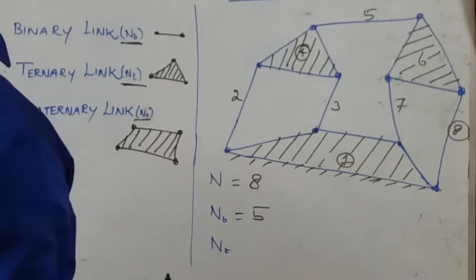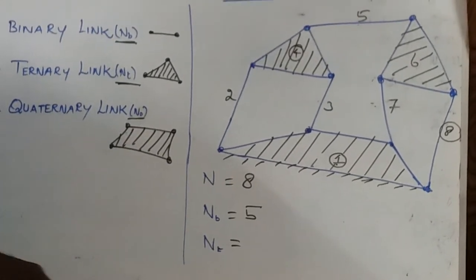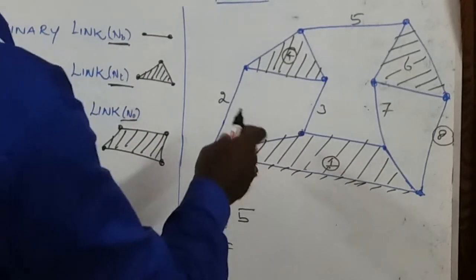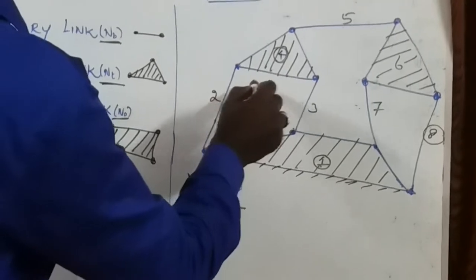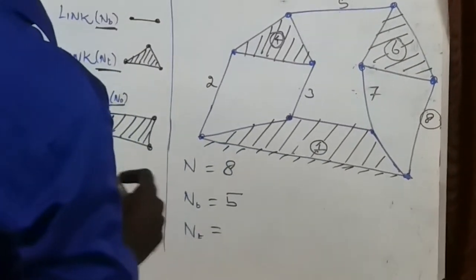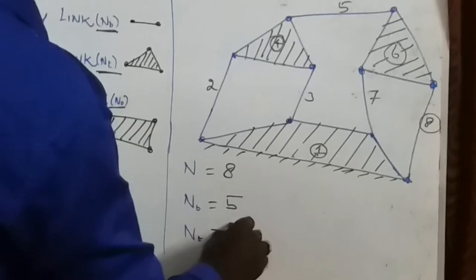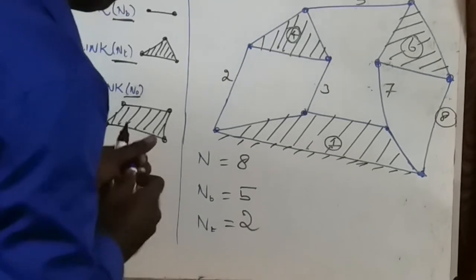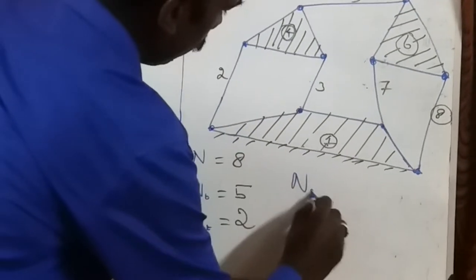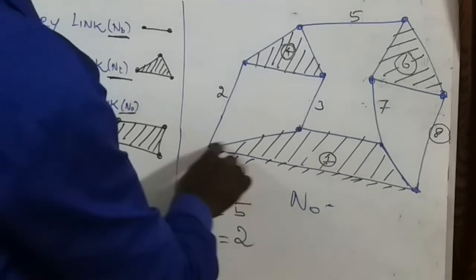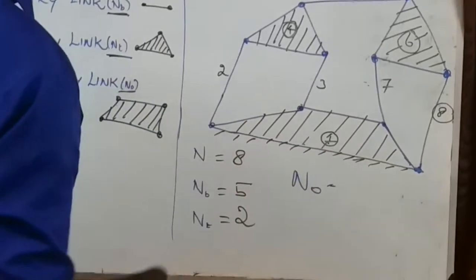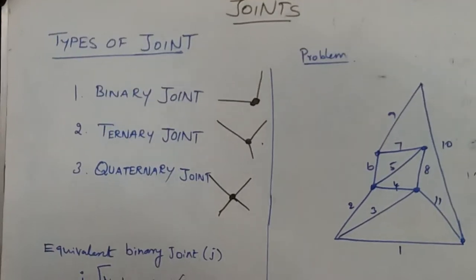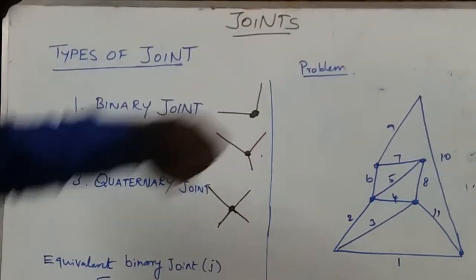Next, the ternary link NT - a link having three ends. Links 1, 2, 3 and similarly link 4 is a ternary link, and link 6 is also a ternary link, so totally 2 ternary links. Last, the number of quaternary links - a link having four ends - there is one quaternary link.